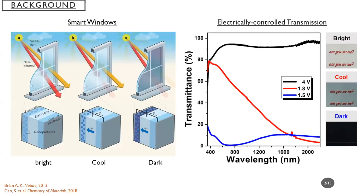So what are electrochromic devices? Basically, an electrochromic device can reversibly change its optical states under applied voltages, as shown in the left figure. This kind of electrochromic device, also known as a smart window, can reversibly change between bright and dark states. On the right side, it shows how the applied voltage switches between two different transmittance states of the smart window.